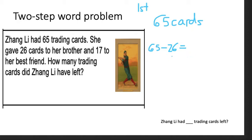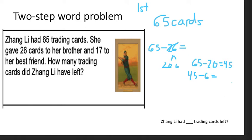Let's figure it out all together. What I'm going to do is turn 26 into a 20 and a 6. 65 minus 20 is 45. Now, 45 minus 6 — what do you think that is? 39. So that means 39 cards is what she had. But am I done? She had 39 cards.